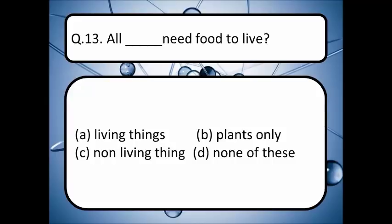All dash need food to live — A, B, C, or D. Give your correct answer. The correct answer is option A — living things.